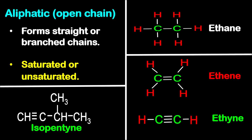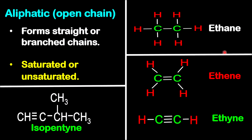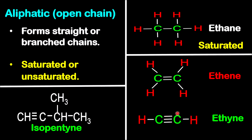For aliphatic or open chain, remember they can be branched or straight chain, and also they could be saturated or unsaturated. Ethane, for example — you only see single bonds, so right away you know this one is saturated and it's also a straight chain. Ethene has a double bond and ethyne has a triple bond, so these two are unsaturated, and they are straight chain as well.